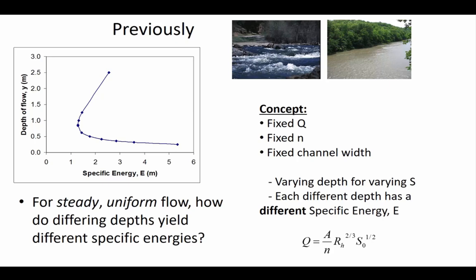Now, think about this curve — it was created for a flow rate of 10 cubic meters per second. So for a fixed flow rate, a fixed roughness, and a fixed channel width, what we would have to do to get different specific energies and different depths is adjust the slope in order to cause those different depths.